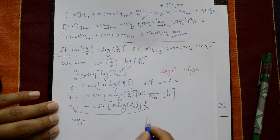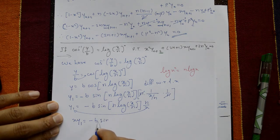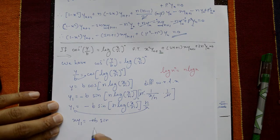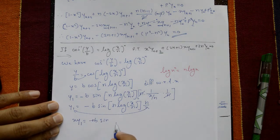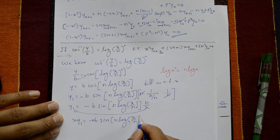We have x y₁ = −nb · sin(n · log(x/n)). It is better to use the product rule for the next differentiation step.